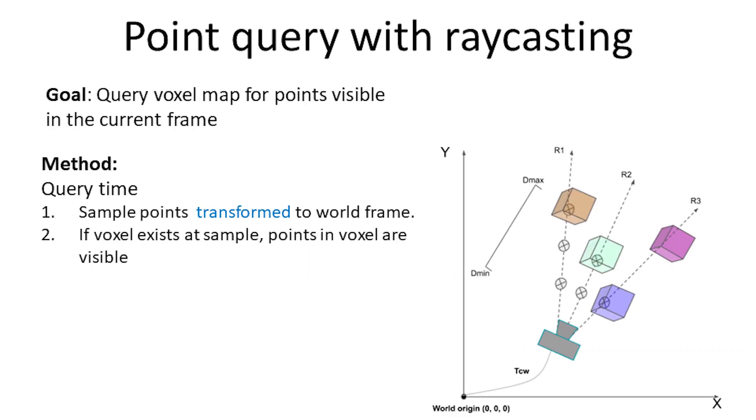At query time, we use the prior on the camera pose to transform the sample points to world frame. At these locations, if voxel exists, points in the voxel are considered visible.